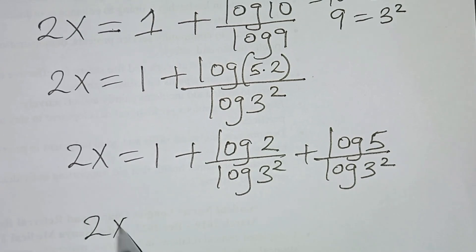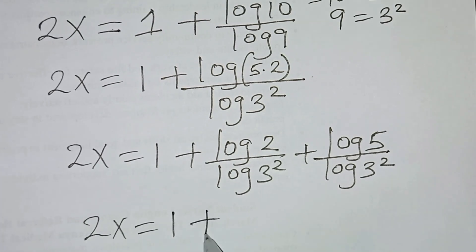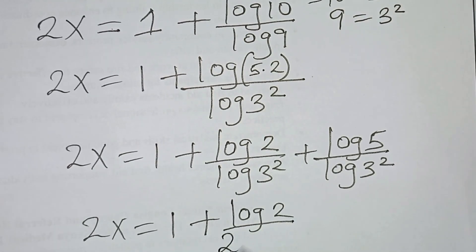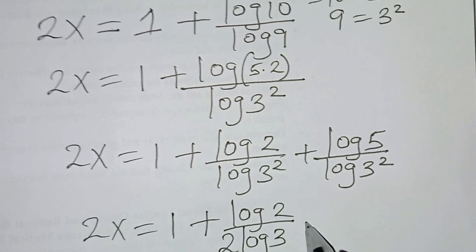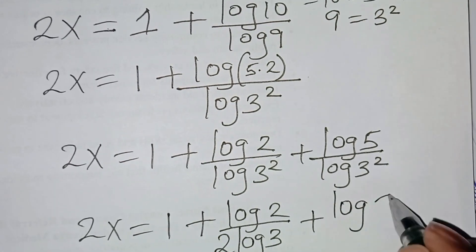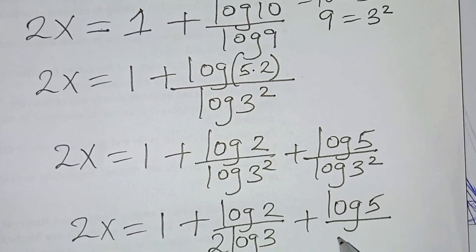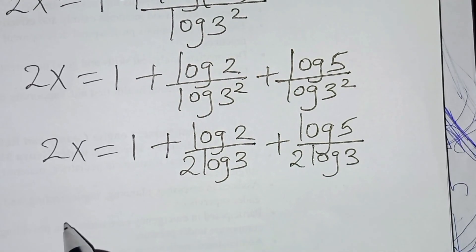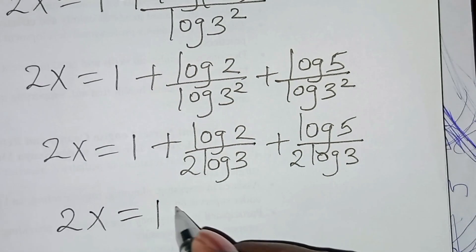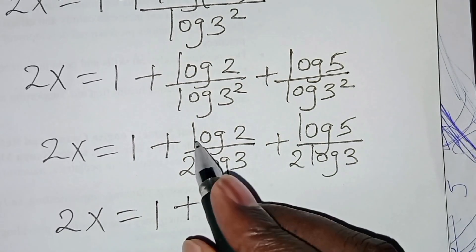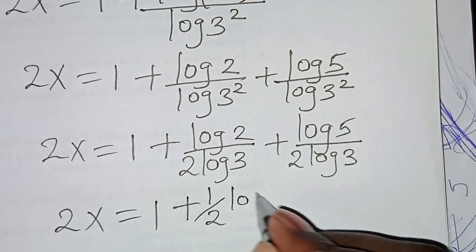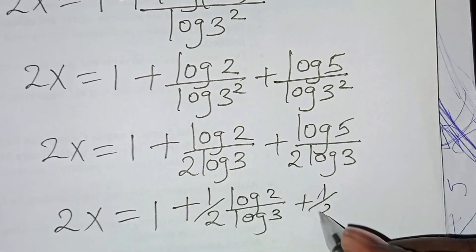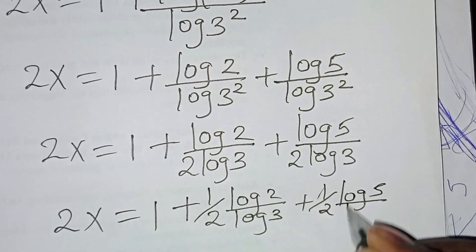So we'll have 2x is equal to 1 plus log 2 divided by log(3²). Applying the power property, log(3²) becomes 2 log 3, so this is log 2 divided by 2 log 3, plus log 5 divided by 2 log 3. Now we'll have 2x is equal to 1 plus one-half times log 2 divided by log 3, plus one-half times log 5 divided by log 3.